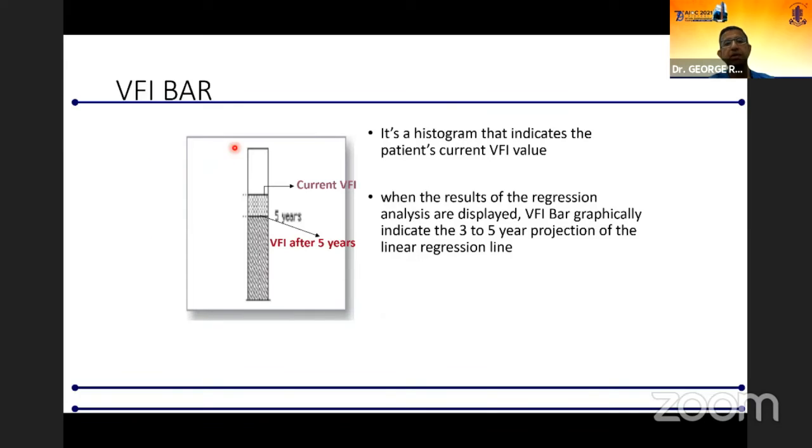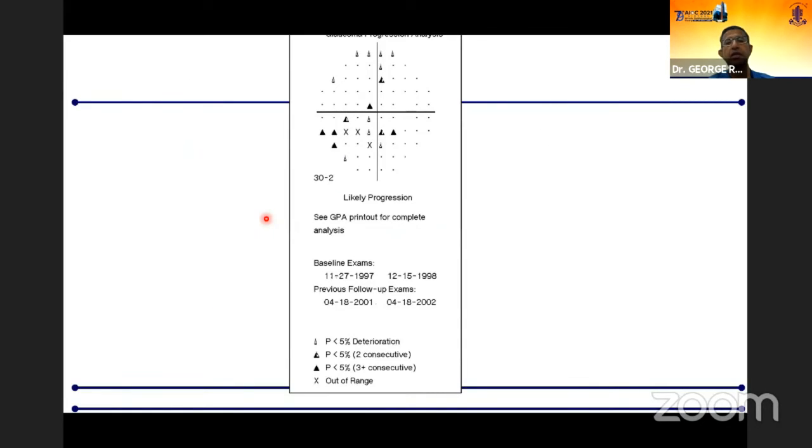You need at least five exams over a three-year period to accurately predict this. It also gives you the VFI bar where it tells you that if this patient continues to progress at this rate, this is where his visual field index is going to be after five years. In addition, on the event analysis, each of these points is classified with an open triangle, a half black triangle, or a completely black triangle, depending on whether that point has deteriorated one visit, two consecutive visits, or three consecutive visits.